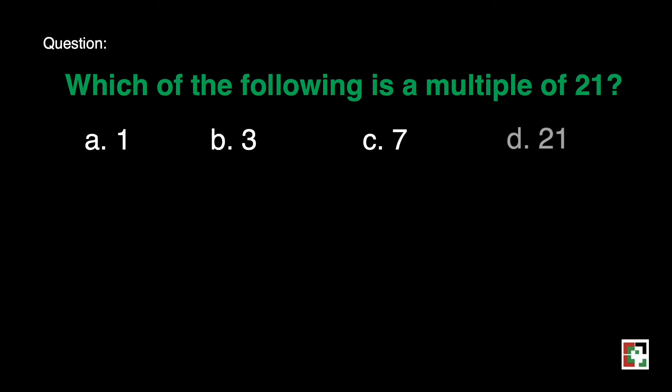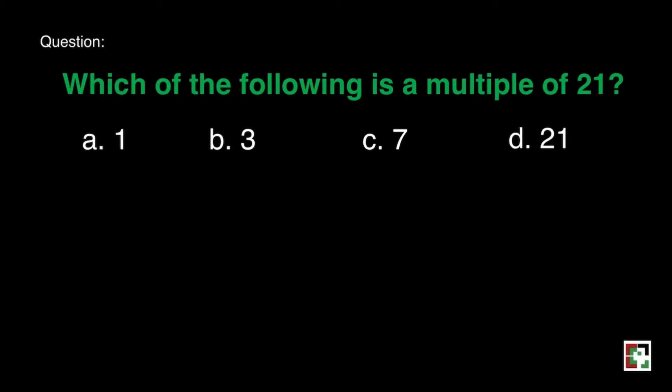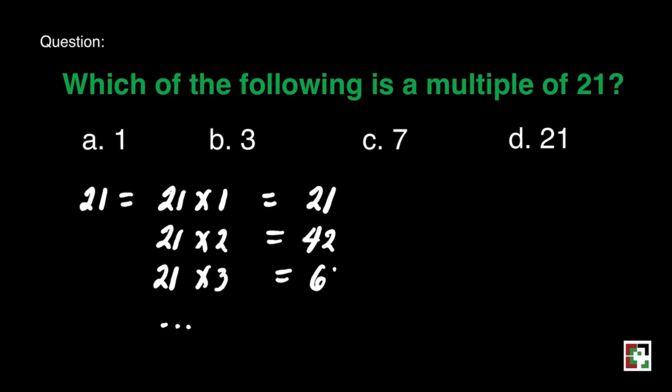To solve this problem, we can use the listing method. We can have 21 is equal to 21 times 1, 21 times 2, and 21 times 3, and so on and so forth. The multiples of 21 are the following, 21, 42, and 63, and so on and so forth. So for this question, our answer is letter D. That's 21.